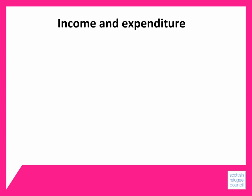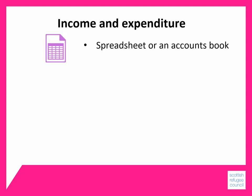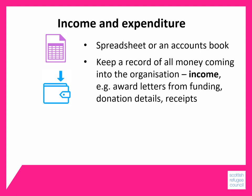It's important to keep a record of all money coming in and going out of the organisation, and you can do this by using a spreadsheet or an accounts book. Money coming into the organisation is called income, and examples of records are award letters from funders, details of any donations, and receipts. So if somebody gives you cash, give that person a receipt and keep a copy.